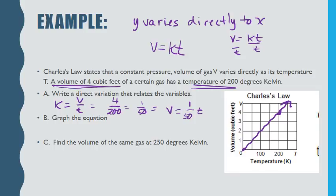So we want to find the volume of the same gas at 250 degrees Kelvin. So we're going to use that formula. Volume equals 1/50 T. And volume is at temperature of 250. So volume is going to be 1 over 50 times 250. So 250 divided by 50 is going to be 5. So our volume is 5.